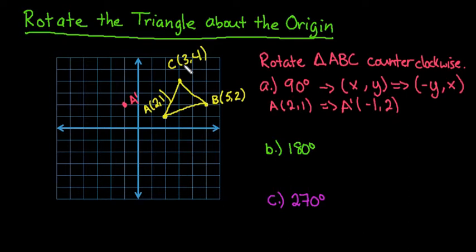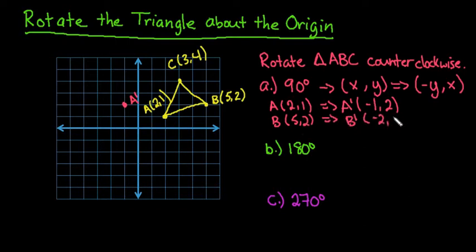For B, which is at (5, 2), the way that this would change is B' would switch the order and change the sign of the new x. So B' would be at (-2, 5). We would go back 2 and then up 5. So this would be our B'.